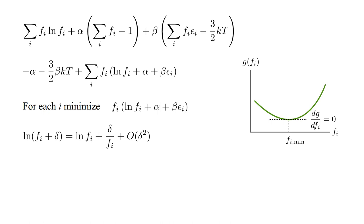For the log of f_i, if we change f_i by delta, the log changes by delta over f_i, plus terms with factors of delta squared, etc. For very small delta, those terms are negligible. Then, substituting f_i plus delta for f_i in our function, we have quantity f_i plus delta times quantity ln f_i plus delta over f_i, plus alpha plus beta epsilon_i.